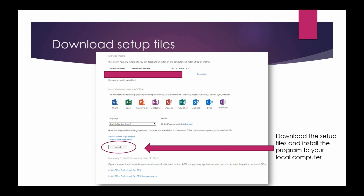Where it says Install, download the set of files and install the program on your local computer. If you do not want to install Office 2013, you can install Office Professional Plus 2010, which is available below the install button.